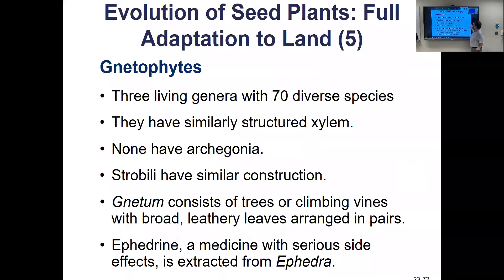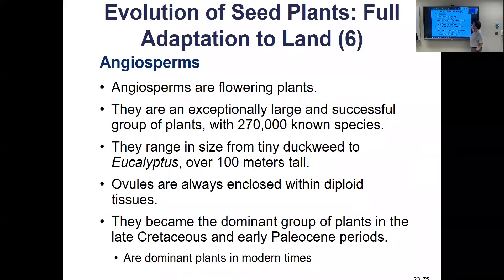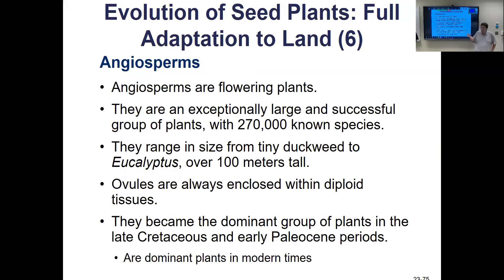Then we get over to the big boys — the flowering plants, the angiosperms: 270,000 species, including almost everything we eat. They're the dominant plant now and they have two evolutionary innovations that separate them from the gymnosperms: they have fruit and flowers. Flowers are used to draw in pollinators — like landing strips.